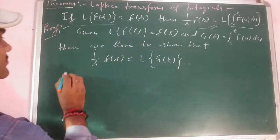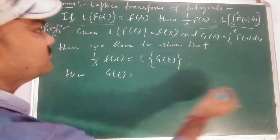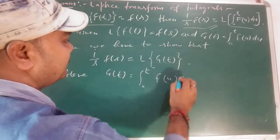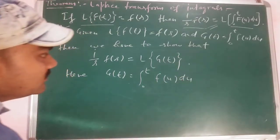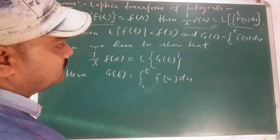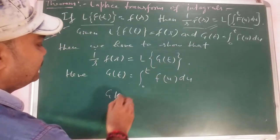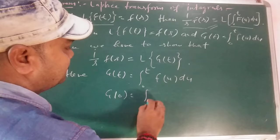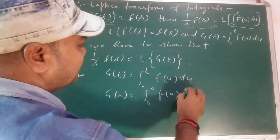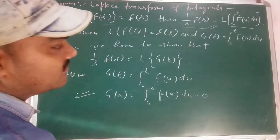So g(t) = ∫₀ᵗ f(u) du. If we find g(0), this is ∫₀⁰ f(u) du, so the limits go from 0 to 0, giving g(0) = 0.